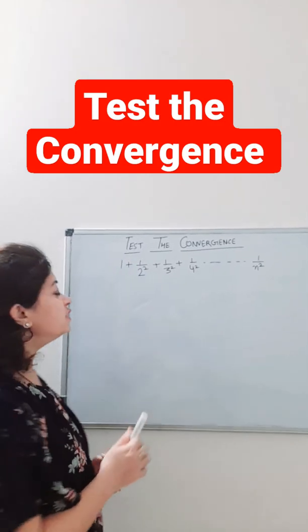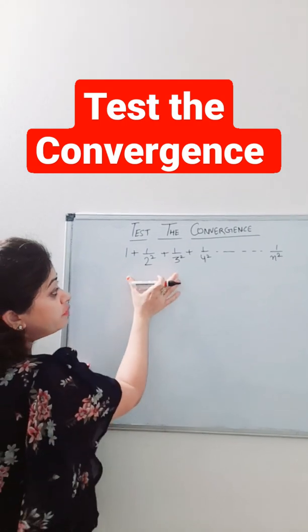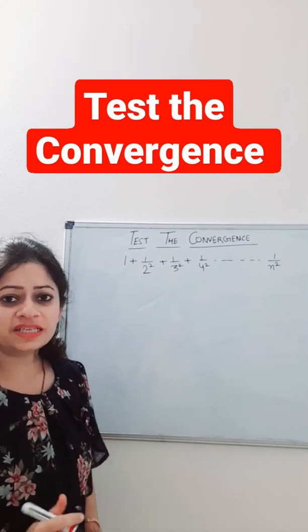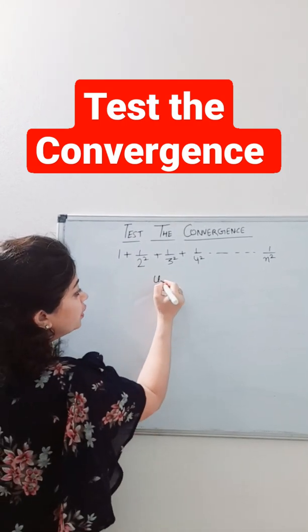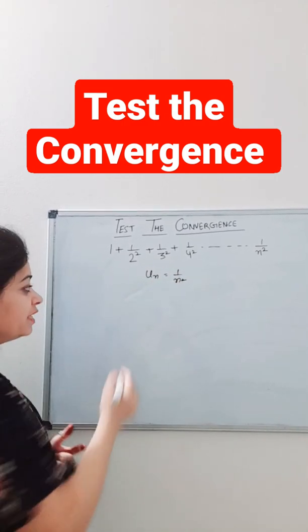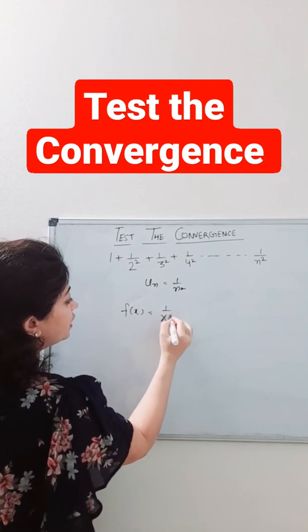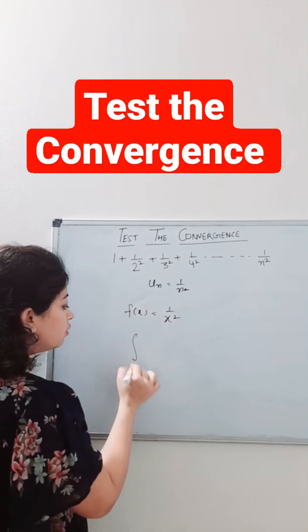Hello and welcome back to my channel. In this video, we need to test the convergence of this series, and we will test this with the help of Cauchy's integral test. Here, u_n = 1/n². In Cauchy's integral test, we relate u_n with f(x). We take f(x) = 1/x².